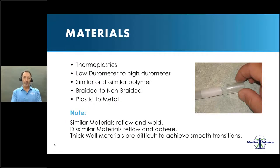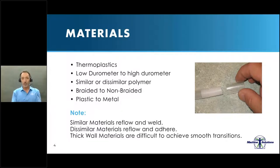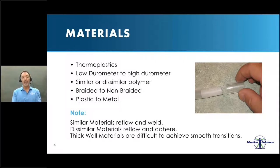The reason you would choose a lap joint is because you have dissimilar materials, where one material is going to adhere to the other. At least one of the materials must be a thermoplastic. That means you can have high durometer to low durometer materials, braided to non-braided, similar to dissimilar polymers, and even plastic to metal. In the case of identical materials, those materials will create a weld and become one polymer again. In the case of dissimilar materials, one material adheres to the other.